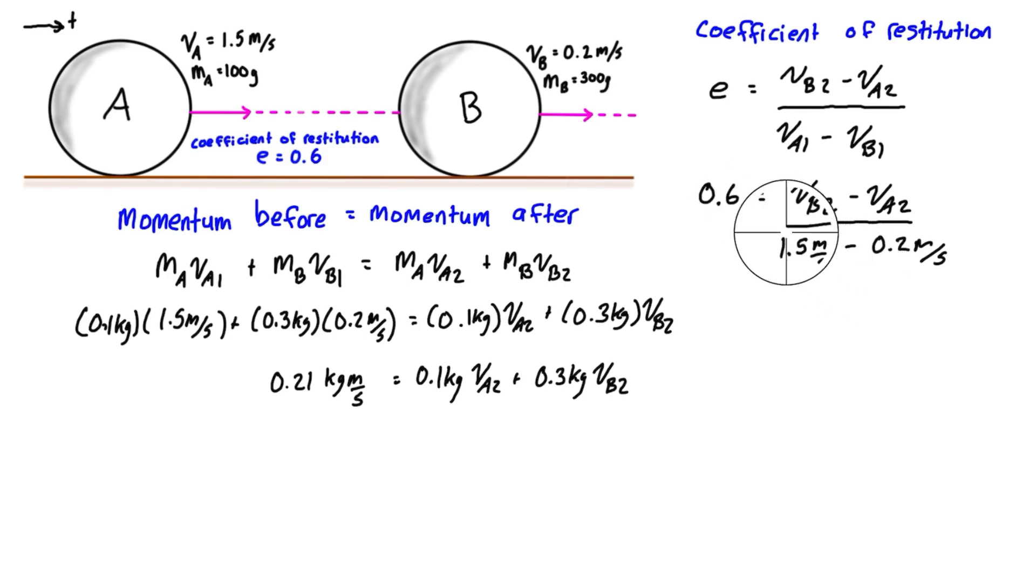What we want to do is we want to multiply 1.3 by both sides, so we're going to be left with, on the left-hand side, 0.78 meters per second is equal to the numerator of the previous fraction, which is vB2 minus vA2. I find it helpful to isolate one of the variables. Let's do it for vB2 here. So vB2 is equal to 0.78 meters per second plus vA2.